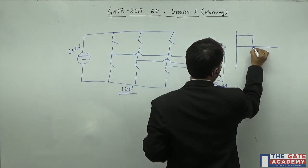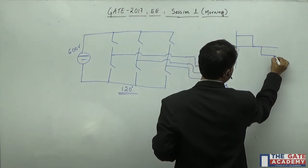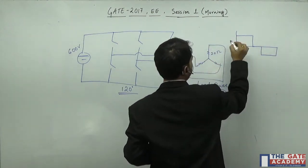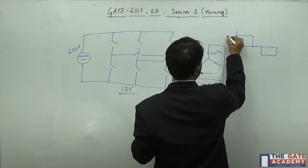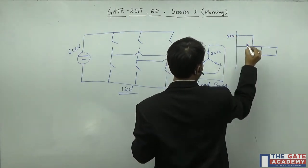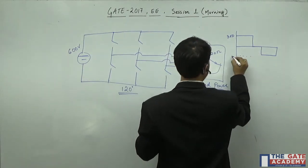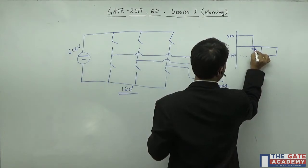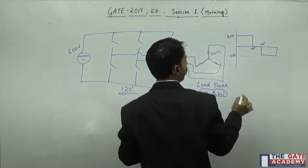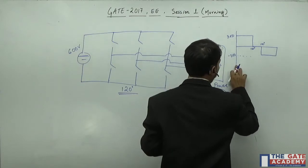The output waveform will be, since it is a 120 degree conduction, it will be something like that. It is 300, will be minus 300. This will be 120 degree, this will be 180 degree. Similarly it will go on.